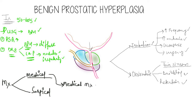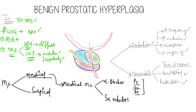In medical management we use two classes of drugs. The first class is alpha blockers, which include prazosin and doxazosin. The second class is 5-alpha reductase inhibitors — this enzyme converts testosterone into dihydrotestosterone — and the inhibitors include drugs like finasteride and dutasteride.